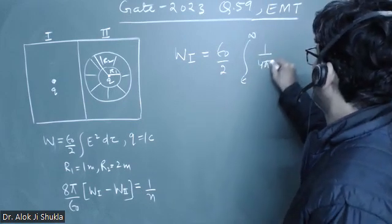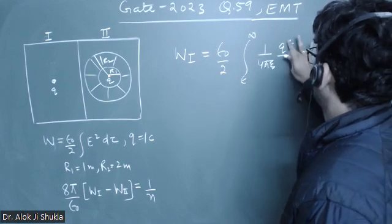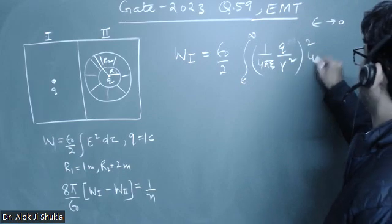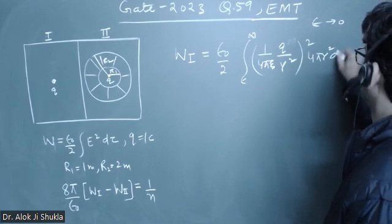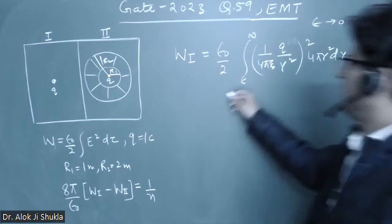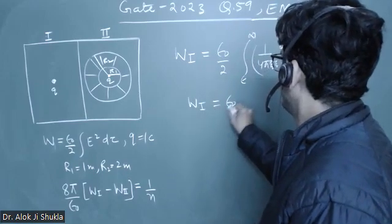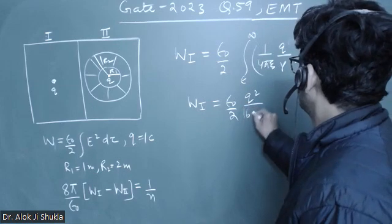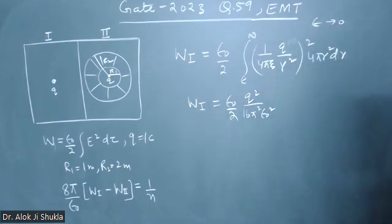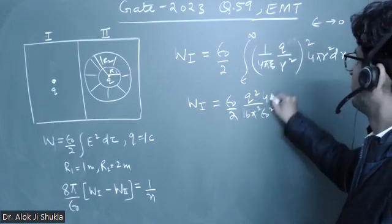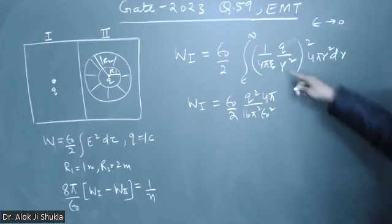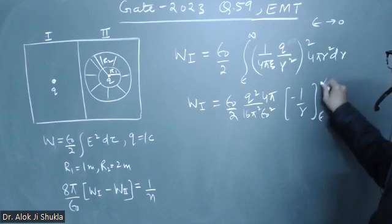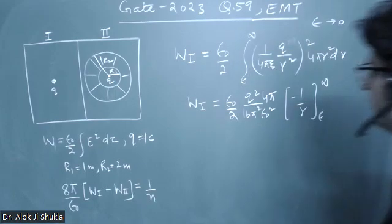The electric field squared term is (1/(4πε₀)) × (q/r²)², and the volume element dτ is 4πr² dr. Carrying out the integration, W1 involves ε₀/2 times the integral. The r⁴ in the denominator and r² from dτ give 1/r², whose integral is −1/r evaluated from epsilon to infinity. I placed epsilon as the lower limit so the term does not blow up.